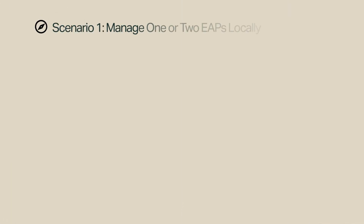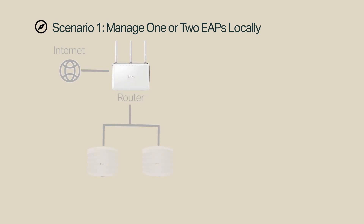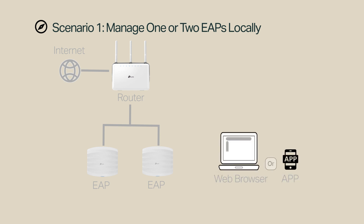To manage one or two EAPs locally, connect your router to the Internet and EAPs to the router. You don't need any controller in this method. You can use either a web browser or the Omada app to manage the EAPs separately in standalone mode.